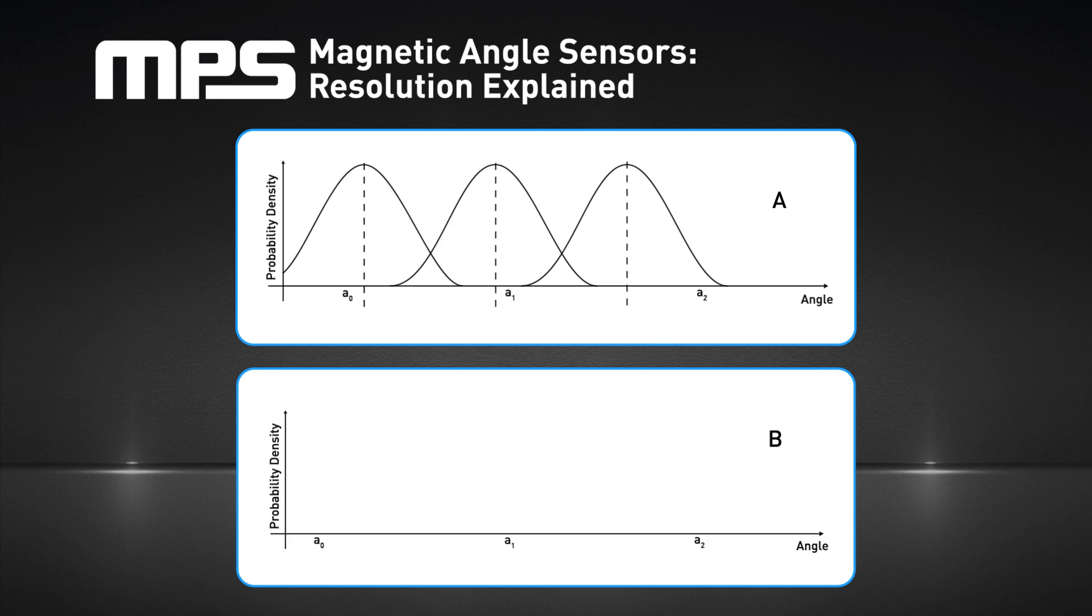If the total area under the Gaussian curve is normalized to 1, then the area delimited by a range of values is the probability that the result of a measurement falls somewhere between A1 and A2. The larger the range, the greater the confidence that a single measurement falls into that range.